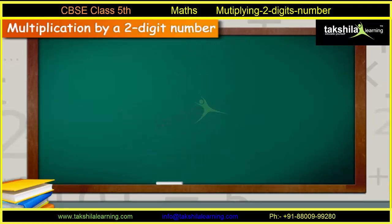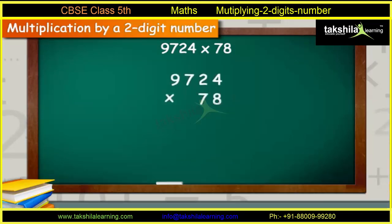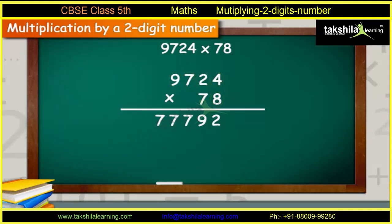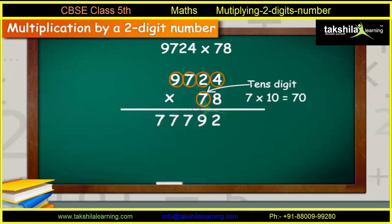Let us take another example. Here we need to multiply 9,724 by 78. Let us first arrange the numbers as shown. Let us first multiply the multiplicand 9,724 with the ones-digit of the multiplier 78, which will be 9,724 into 8, which comes out to be 77,792. Now, let us multiply the multiplicand 9,724 with the tens-digit of the multiplier 78, which will be 9,724 into 70.